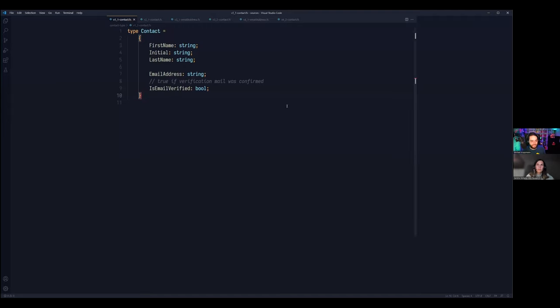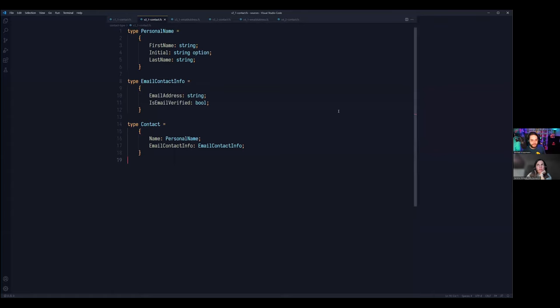So here we have a type called contact. It contains a first name, initial, last name and an email address, all are strings. There's also this Boolean flag called is email verified with a comment that says that if the verification mail was confirmed, then this is set to true. But what happens when the mail address changes? Does it stay verified? We don't know. And we have to figure this out later. Looks like a typical contact type to me, but we can do better.